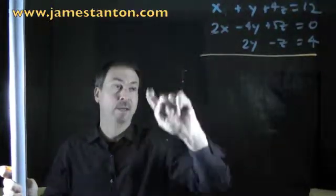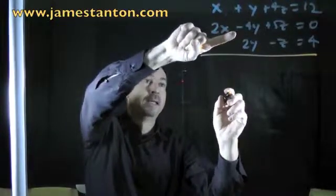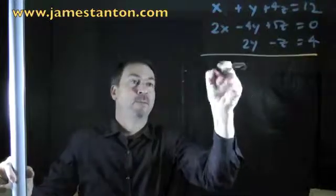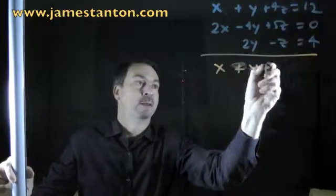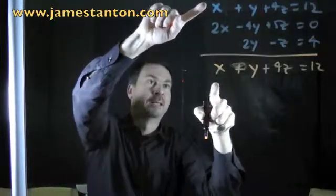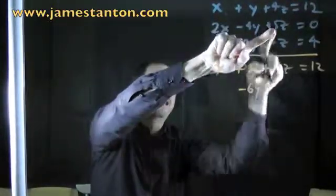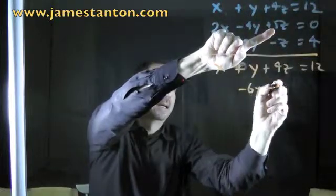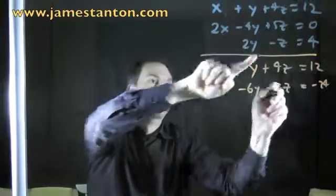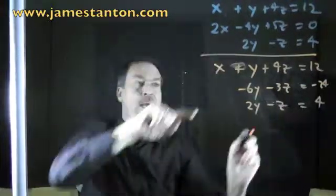So 2x's take away 2x's would be 0. Negative 4y's take away another 2y's would be negative 6y's. The first equation I'm not touching — 4z equals 12. Second equation I'm changing: 2x's take away double that is 0; negative 4y take away 2y's is negative 6y's; 5z's take away 8z's is negative 3z's; equals 0 take away 24 is negative 24. And I'll leave the third equation untouched because I can only do one thing at a time.